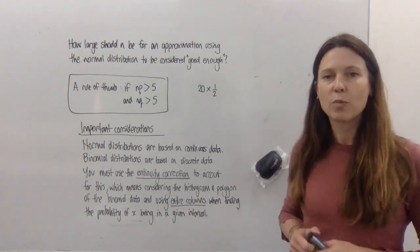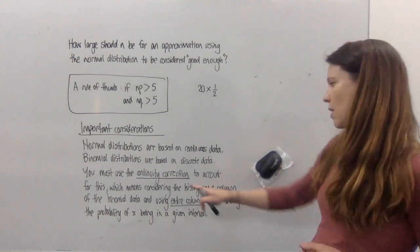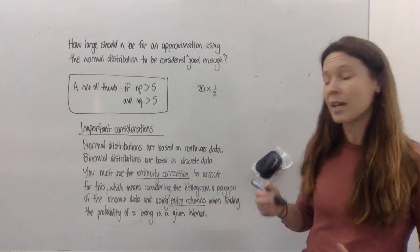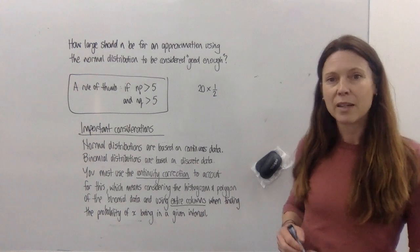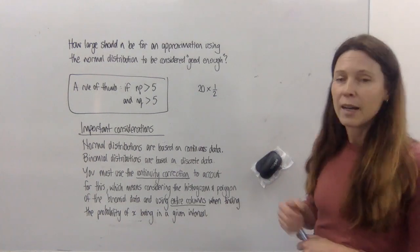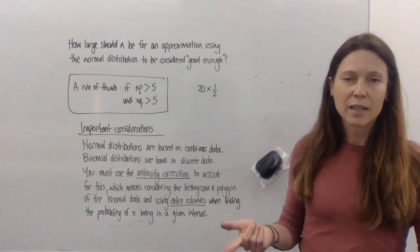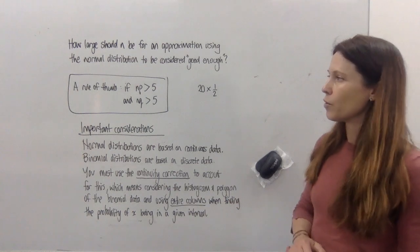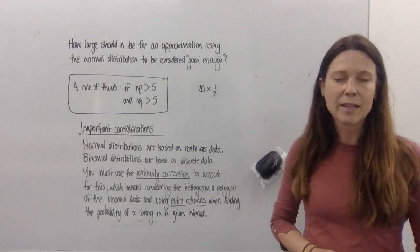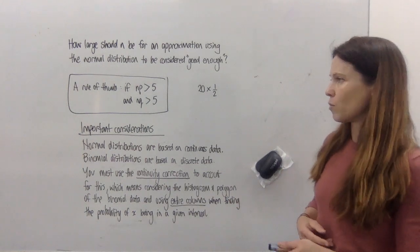So in the first couple of examples, just make sure you're marking your work each time to check that you're using that continuity correction correctly, because that's really the only tricky part in this topic. Other than that, you'll be finding mean and standard deviation of your distributions, which you already did in the last exercise. So those steps should be fairly straightforward.